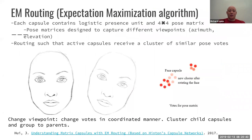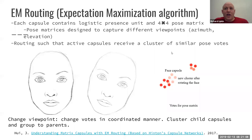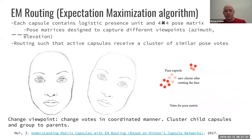Now we can talk about EM routing — the second paper, which uses the expectation-maximization algorithm. In the EM algorithm, each capsule contains a logistic presence unit and a 4×4 pose matrix. This is different from the routing-by-agreement method, where each capsule has a probability and an angle vector. Here we're dealing with a matrix instead of a vector — that's the key difference. The pose matrices are designed to capture different viewpoints. Active capsules are supposed to receive clusters of similar pose votes — if the pose matrices are similar, they vote for a similar pose and we form a face capsule based on that.